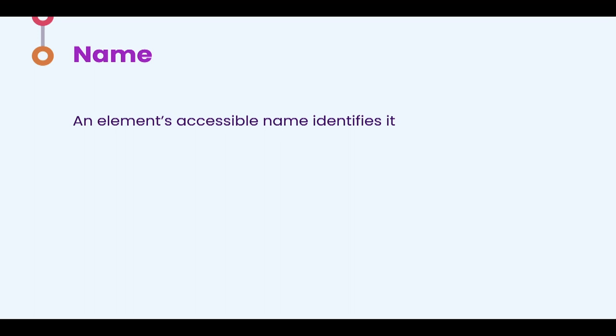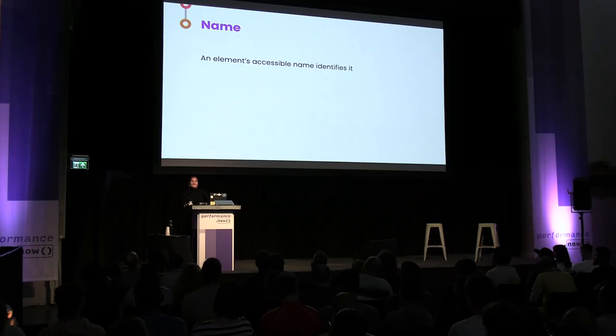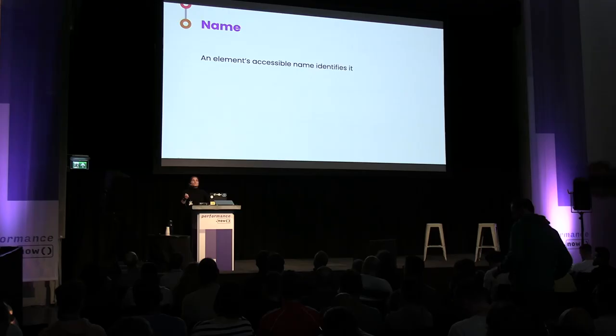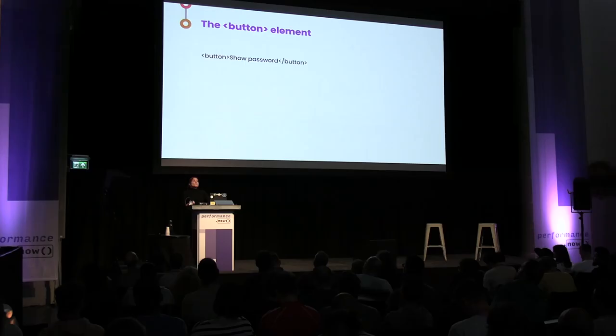We keep building on this information. We get an element's accessible name — sometimes the content inside a link or button, the alt attribute on an image, or the label associated with a form field. Like how my name is Leonie and Tim's name is Tim — we all have names that help us tell each other apart in a crowded room. If we have lots of links or buttons on a page, the accessible name helps us tell one apart from the other. So if we put some text inside a button, what my screen reader tells me is: 'Show password button.' I now know there's a button on screen and what it's for.